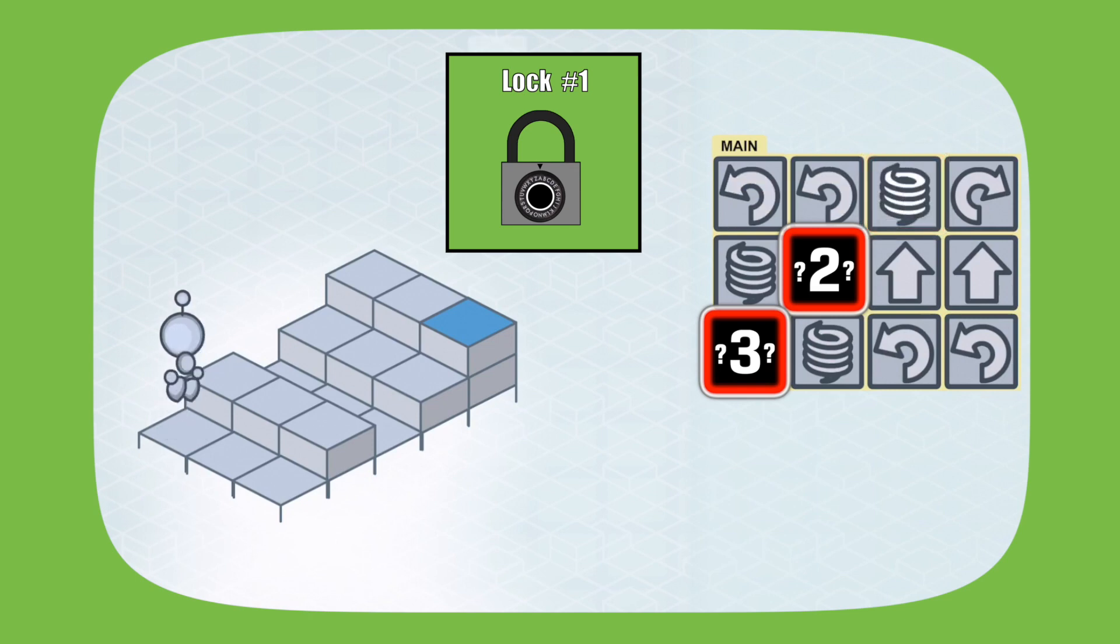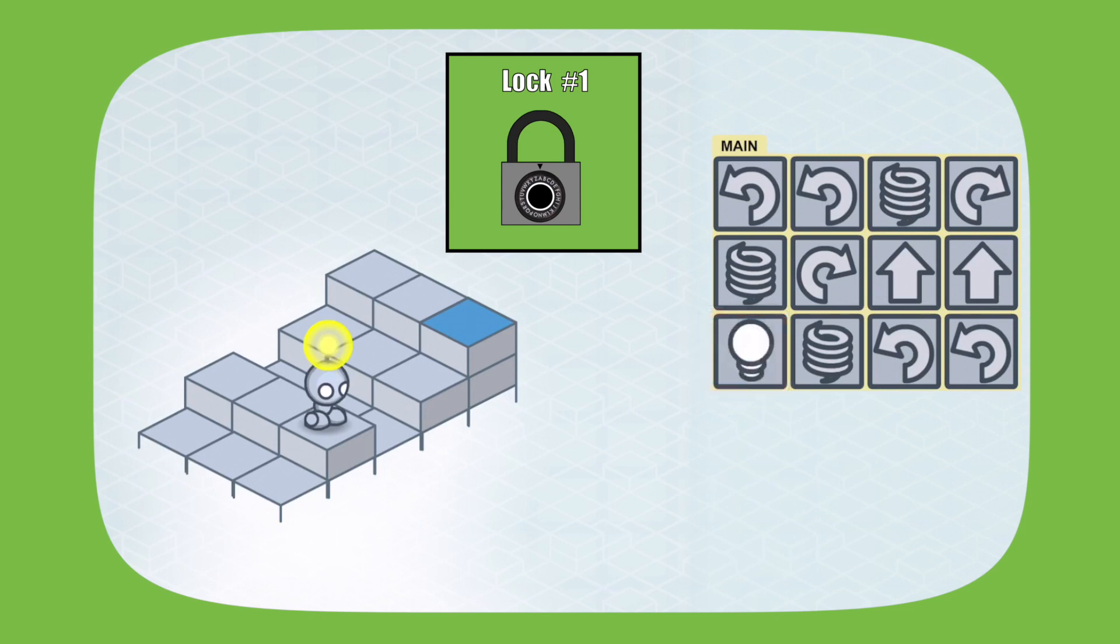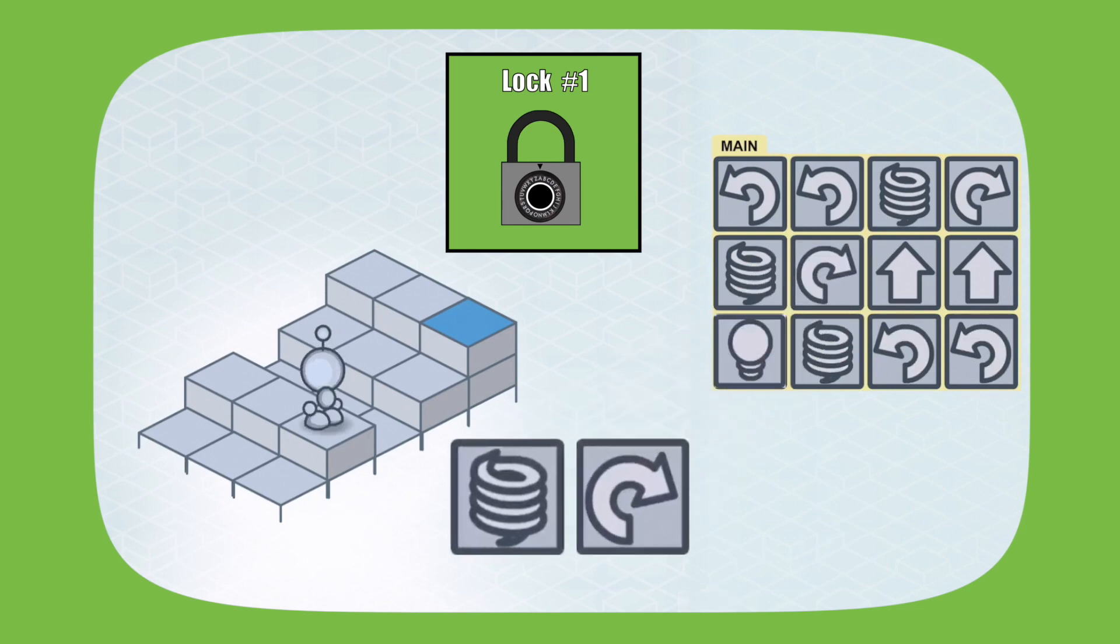The first mystery command was a jump. The second mystery command was a turn to the right and the final mystery command was the light command. I can see the yellow dot flash above the robot's head. Great so the lock combination is jump, turn right, light.